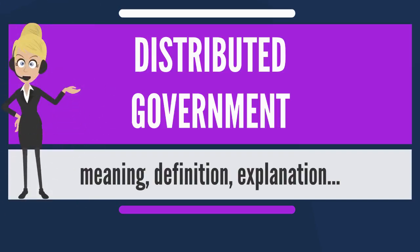A divided government is a type of government in which one party controls the executive branch while another party controls one or both houses of the legislative branch. The situation occurs in governance systems that follow the separation of powers model.